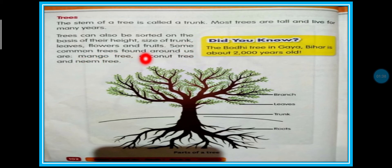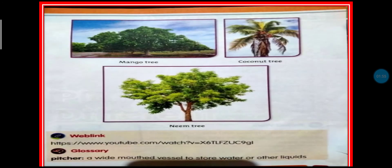Some common trees found around us are - jo humne dekhi hui hai wo kaun si hai? Mango tree, coconut tree and neem tree. Yeh trees common hain. See, mango tree, coconut tree and neem tree.